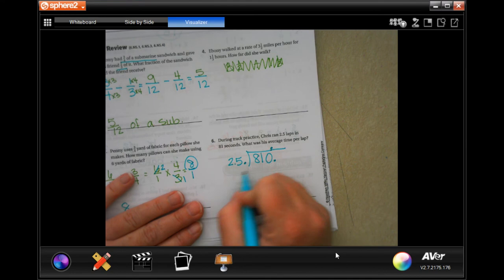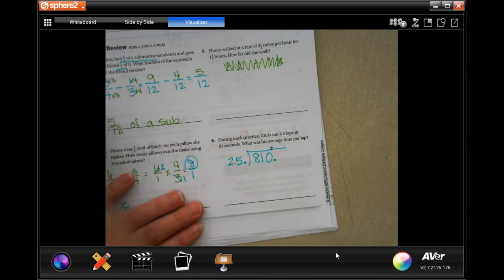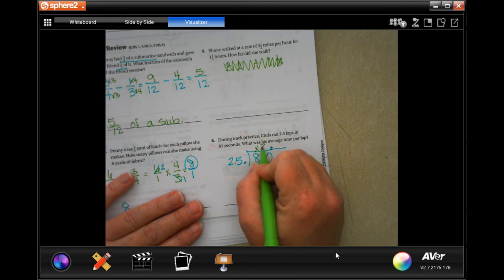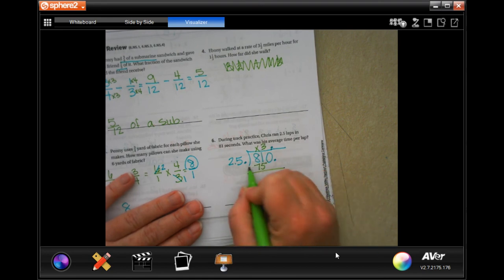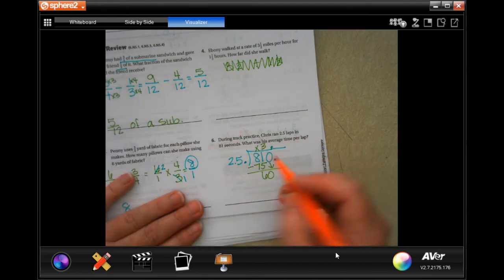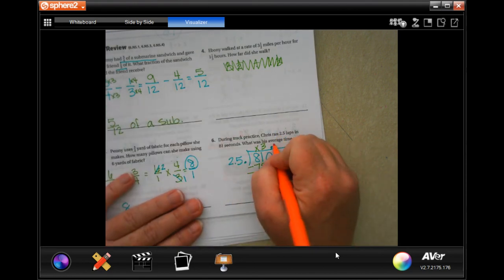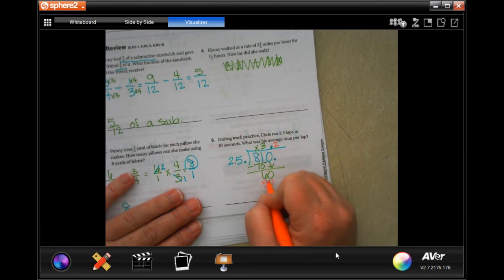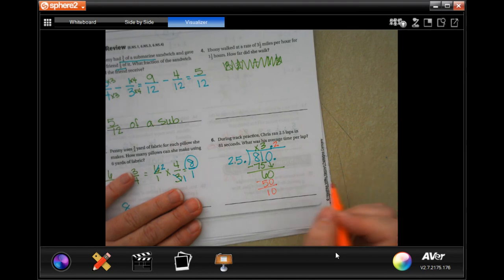So now 25 is not going to go into 8. It will go into 81 three times, giving me 75, 6 left over. 6 is less than 25. I can bring down my 0. 25 into 60 is going to go twice, like 2 quarters will go into 50 cents. Get 10 left over.